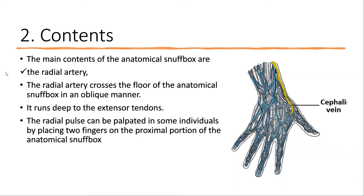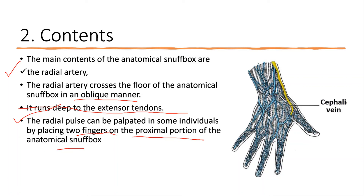The main content of the anatomical snuffbox is the radial artery. The radial artery crosses the floor of the anatomical snuffbox in an oblique manner and then runs deeper to the extensor tendons. The radial pulse can also be felt by palpating with two fingers on the proximal portion of the snuffbox, where you can feel the radial pulsations.